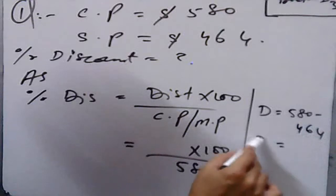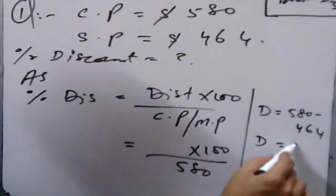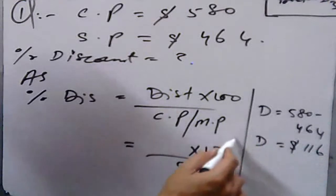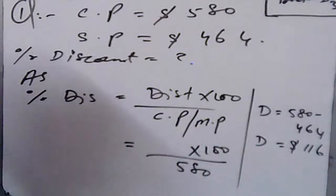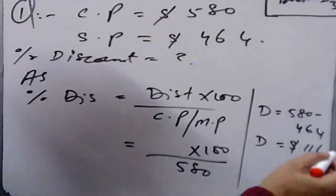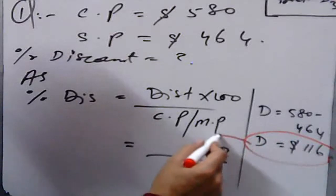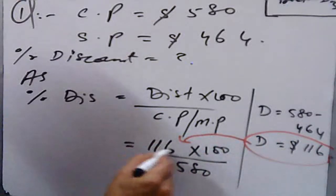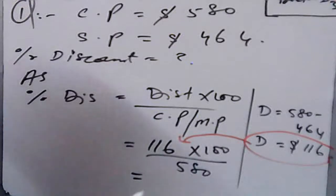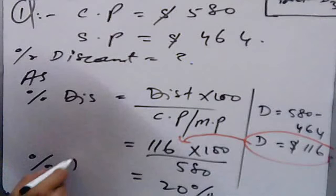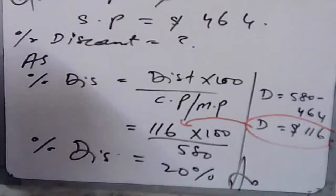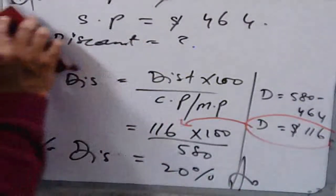Discount equals Cost Price minus Sale Price. So that is $580 minus $464, giving a discount of $116. Putting this into the formula: (116 × 100) ÷ 580, we get 20%. So 20% is your required percentage discount.